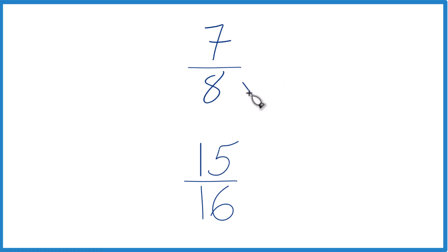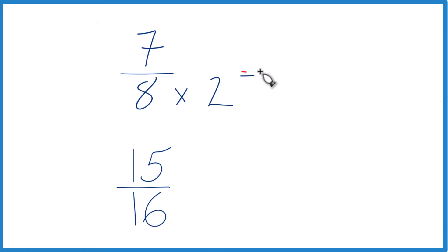Let's multiply 8 times 2, because 8 times 2, that's 16. Down here we already have 16, let's keep this the same, 15/16.